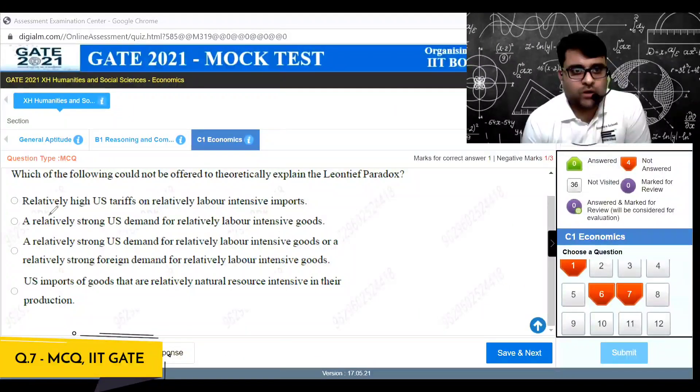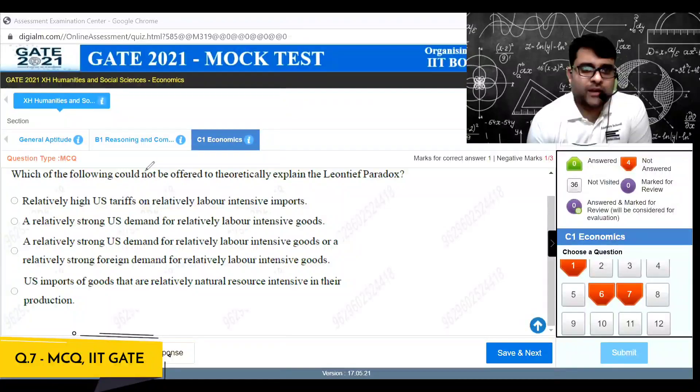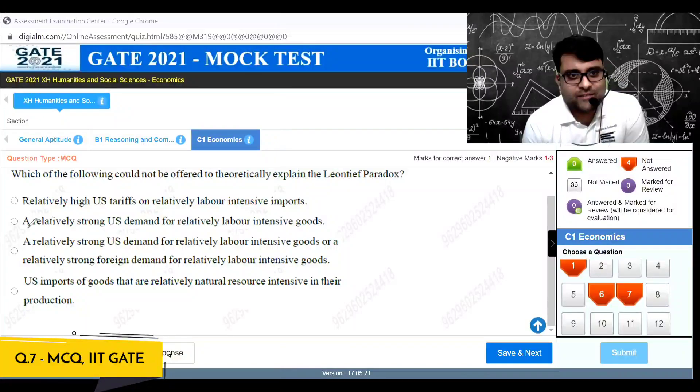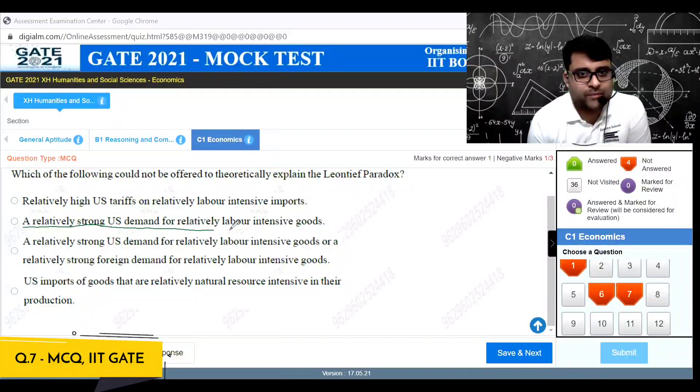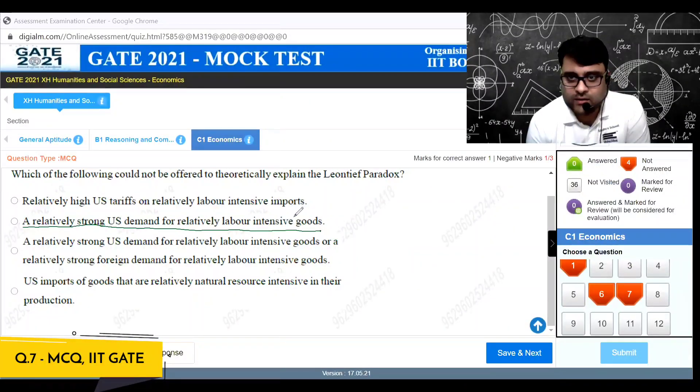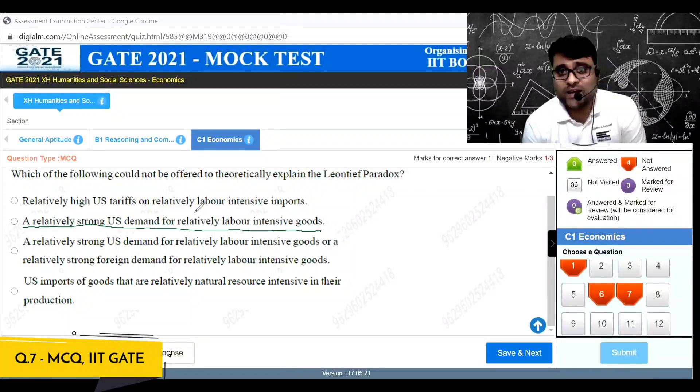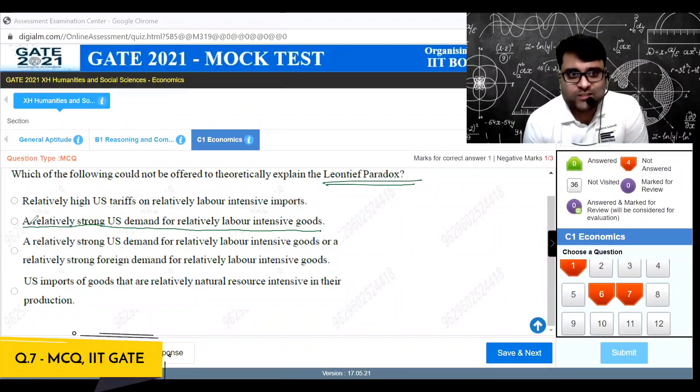Gate 2021 mock question number seven. Which of the following could not be offered to theoretically explain the Leontief paradox? A relatively strong U.S. demand for relatively labor intensive good. Obviously if U.S. had a strong demand for labor intensive, it would have imported labor intensive good, but in fact we saw that U.S. was exporting labor intensive good and importing capital intensive. That was the paradox in the first place, so this option B is mentioning the opposite. This is the answer.